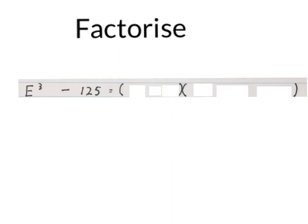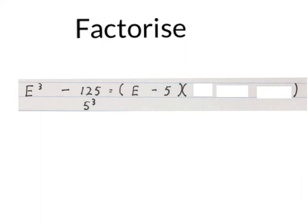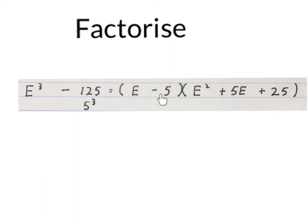Let's do E cubed minus 125. You must know that 125 is 5 cubed, so it is also a cube number. The cube root of E cubed is E. Write down the minus and the cube root of 125, which is 5. E times itself gives E squared. E times minus 5 is minus 5E — change the sign to get plus 5E. Minus 5 times minus 5 is plus 25 at the back.